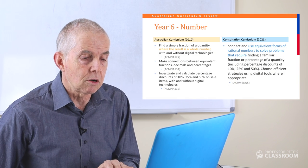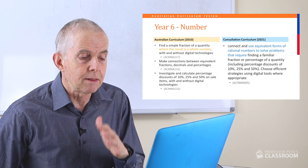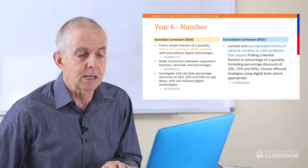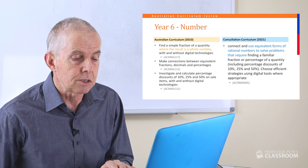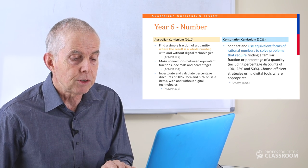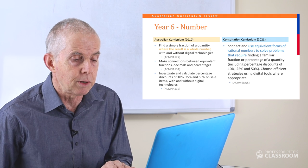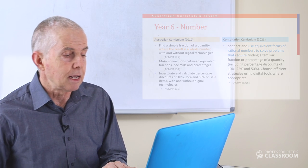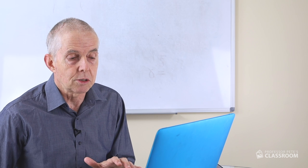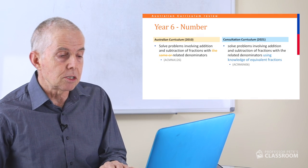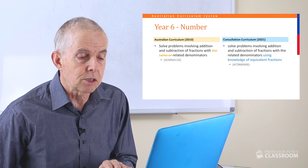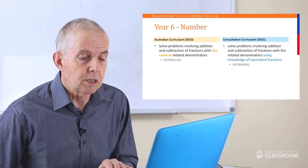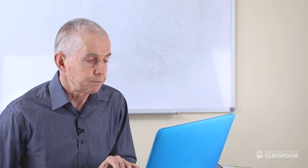Moving on, number five: connect and use equivalent forms of rational numbers to solve problems — finding a familiar fraction or percentage of a quantity, including percentage discounts of 10, 25 and 50%. Choose efficient strategies using digital tools where appropriate. Little has changed here and this is another worthwhile content descriptor. Number six is almost identical: solve problems involving addition and subtraction of fractions with related denominators using knowledge of equivalent fractions.